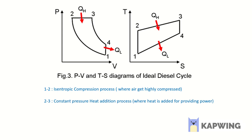From 2 to 3, you can see that the pressure is kept constant and volume gets increased. So process 2 to 3 is the constant pressure heat addition process.